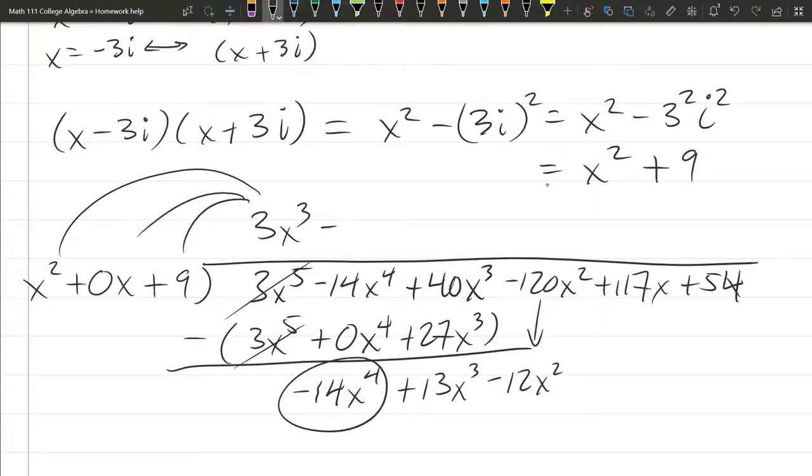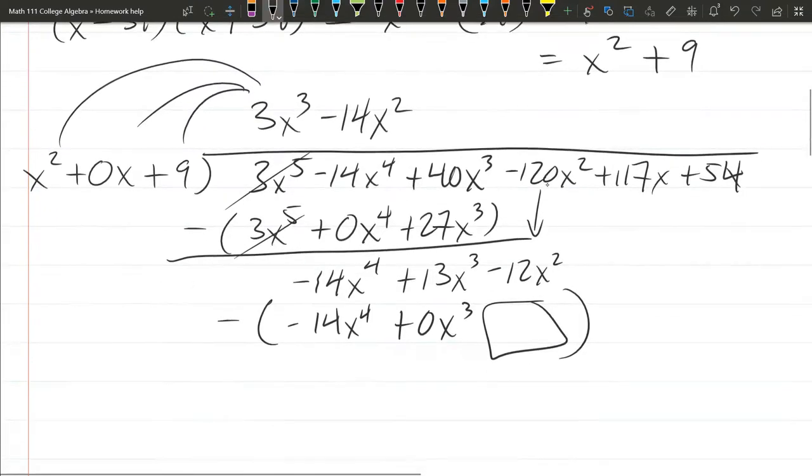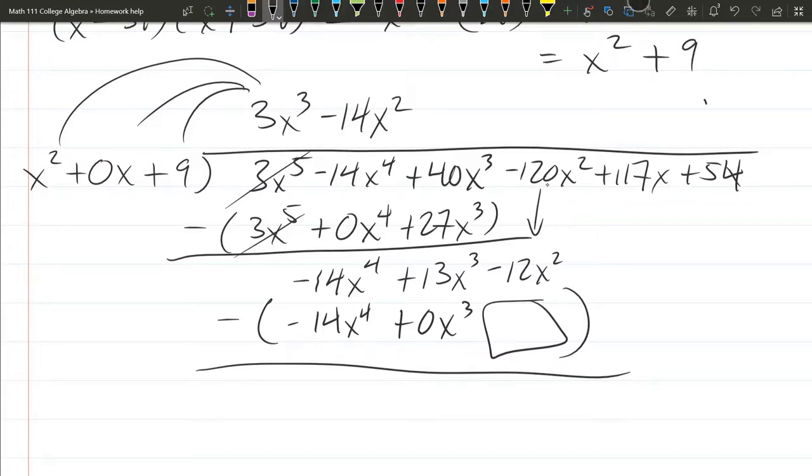The next term, we need a negative 14x to the fourth. So it's negative 14x squared because when I multiply, I'm going to pick up an x squared. That's going to give me negative 14x to the fourth plus 0x cubed because of that 0x here. And then negative 14 times 9 is a lot, and whatever that is, it's going to go here. Just make sure you subtract and keep going. It's going to go on like this. You do need to make sure you have a remainder zero.